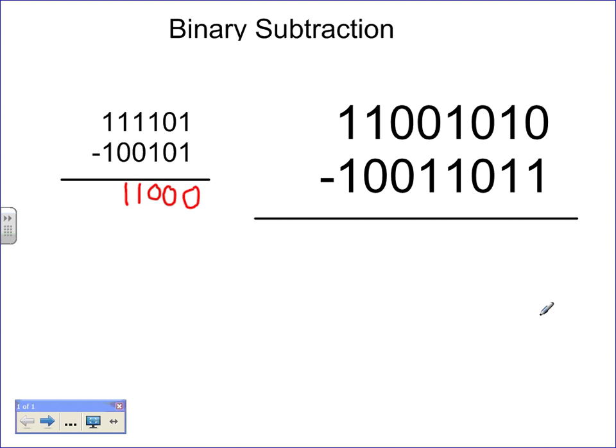So I have 0 minus 1, and for this I have to borrow. So for me to borrow, I have to cross this one out and make it a 0. But when I bring over that 1 into the column to the right of it, it becomes two 1's. So now I have two 1's, one of which will be subtracted. This one here will be subtracted from this one here, and we would have a 1 left over.